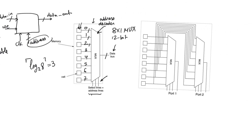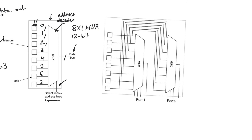Now consider a memory with the same eight locations but containing two address decoders — this is a two-port memory, with port 1 and port 2. This is an asynchronous read-only memory because there is no data in, write enable, or clock. What distinguishes it as a two-port memory is not that it has two data out buses, but that it has two address buses. This allows us to read from two independent memory locations simultaneously. A port is defined by the presence of an address bus.